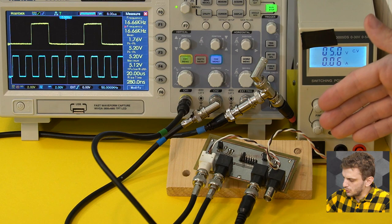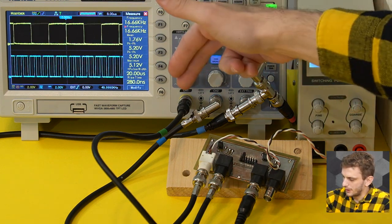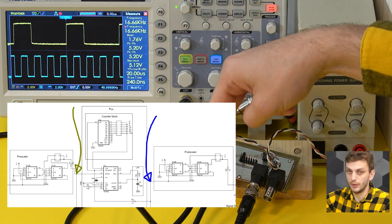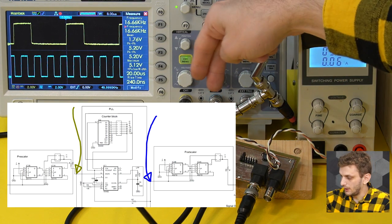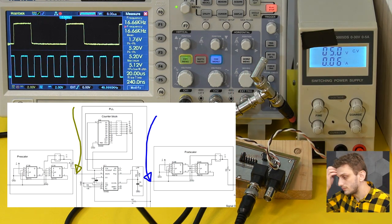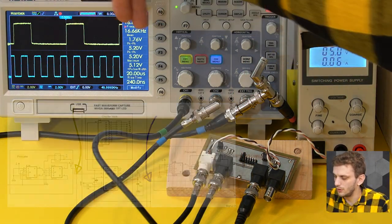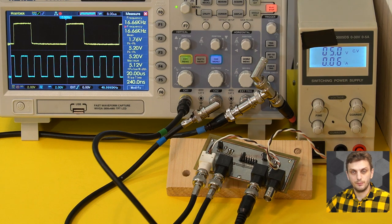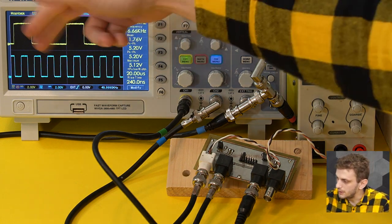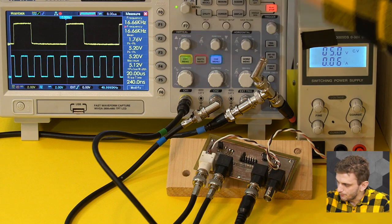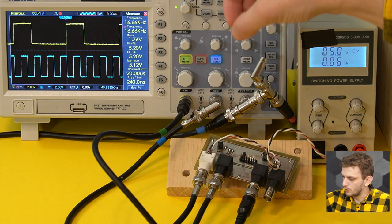Moving on, the first channel now goes after the pre-scaler — at the input of the PLL — and the second oscilloscope channel goes to the output of the PLL. We can see in yellow our input signal with 33% duty cycle coming out of the pre-scaler, and in blue the output of the PLL. In this case, it's configured to multiply by four — for every pulse on yellow, we get four pulses on blue.